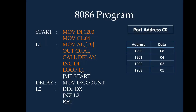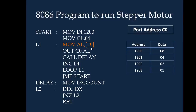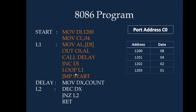The loop instruction decrements CL by 1 and checks if it is 0. Since it is not 0 and CL is 3, it moves to L1 which is MOV AL, [DI]. So now 4 will be moved to AL and sent to port C0. Similarly all values 8, 4, 2, 1 will be sent, and after loop L1 executes and CL becomes 0 it will jump to start. Again it starts from the first location where DI is re-initialized to 1200, so 8, 4, 2, 1 repeats and the stepper motor keeps on continuously rotating.